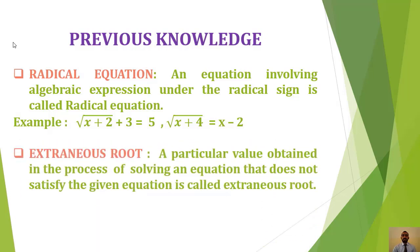Extraneous roots: particular values obtained in the process of solving an equation that do not satisfy the given equation are called extraneous roots. Beta, those values which we get after solving a radical equation — if they do not satisfy the given equation, those values are called extraneous roots.